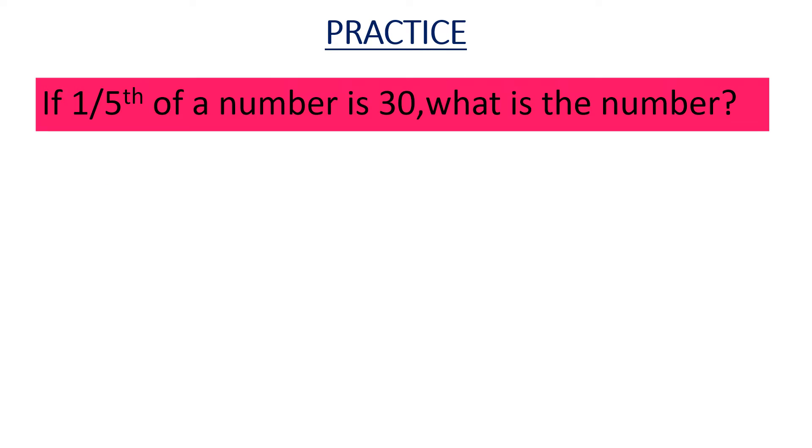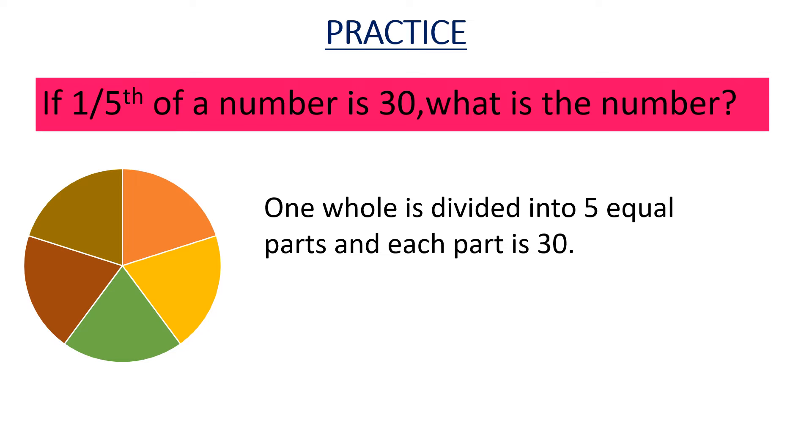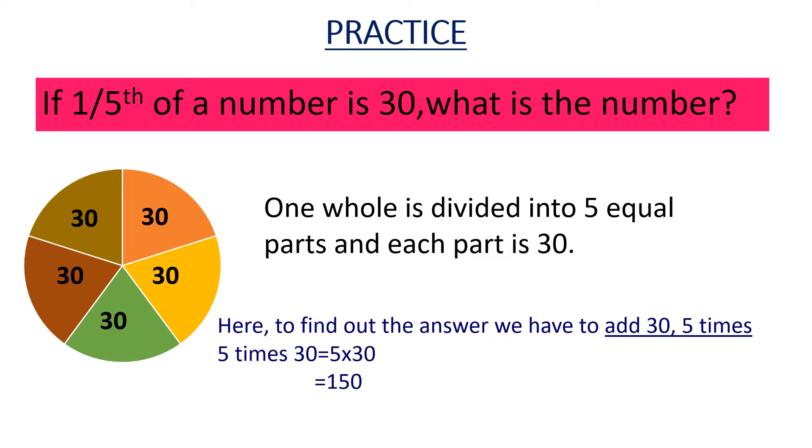Let us practice one more sum. If one fifth of a number is 30, what is the number? Here also, one whole is divided into five equal parts and each part is 30. So, if this is 30, this is also 30, 30, 30 and 30. So, here to find out the answer, we have to add 30 five times. So, 5 times 30 is equal to 5 into 30 equal to 150.